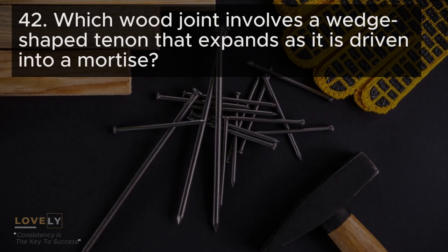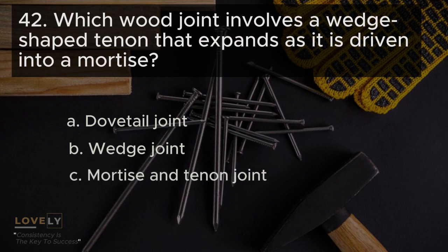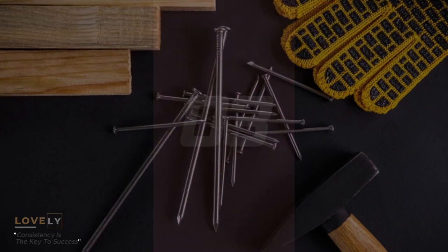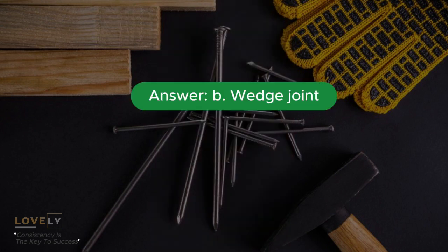Question 42: Which wood joint involves a wedge-shaped tenon that expands as it is driven into a mortise? A. Dovetail joint B. Wedge joint C. Mortise and tenon joint D. Lap joint. Answer B. Wedge joint.